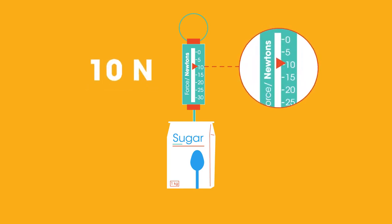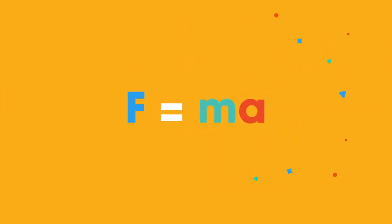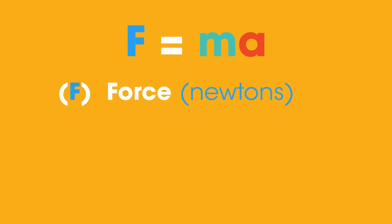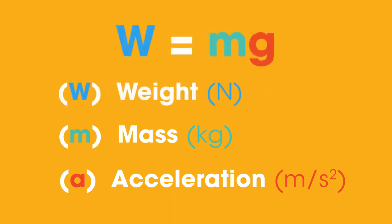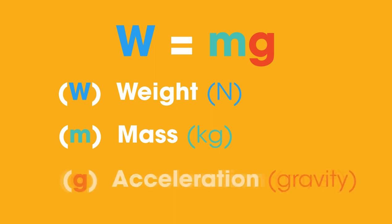Can you remember the equation that links mass with weight? Remember F equals ma, where F is force in newtons, m is mass in kilograms, and a is acceleration in meters per second per second. We can rewrite this a little as w equals mg, where w is weight in newtons and g is acceleration due to gravity.